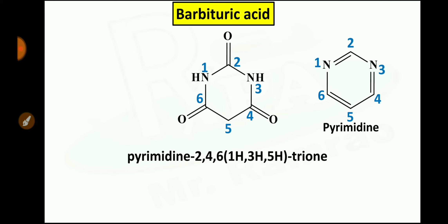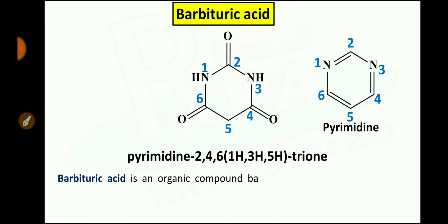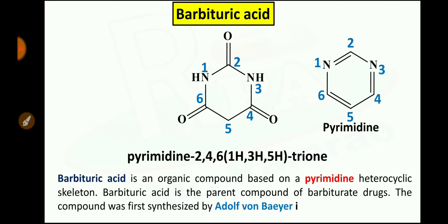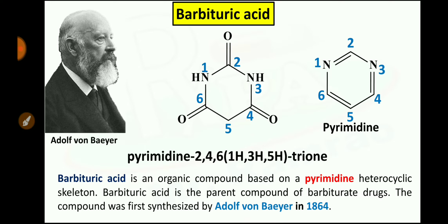This is the structure of barbituric acid which we have already discussed during the sedatives and hypnotics. Barbituric acid is an organic compound based on a pyrimidine heterocyclic skeleton and is the parent compound of barbiturate drugs. The compound was first synthesized by Adolf von Baeyer in 1864. He also synthesized one of the important indicators used in acid-base titration, that is phenolphthalein, and because of his important contributions in organic chemistry, he received the Nobel Prize in 1905 in chemistry.